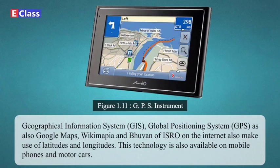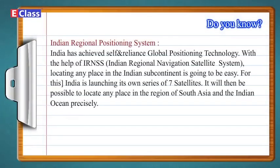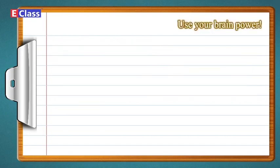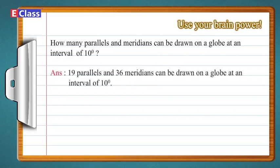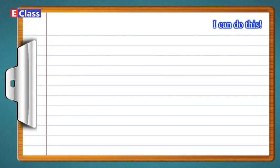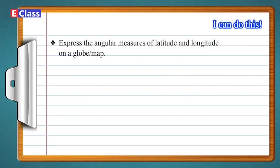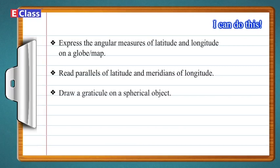Figure 1.11 — GPS Instrument. Do you know? Indian Regional Positioning System: India has achieved self-reliance in global positioning technology. With the help of IRNSS (Indian Regional Navigation Satellite System), locating any place in the Indian subcontinent is going to be easy. India is launching its own series of 7 satellites, making it possible to locate any place in the region of South Asia and the Indian Ocean precisely. Use your brain power: How many parallels and meridians can be drawn on a globe at an interval of 10 degrees? I can do this: Express the angular measures of latitude and longitude on a globe or map; read parallels of latitude and meridians of longitude; draw a graticule on a spherical object.